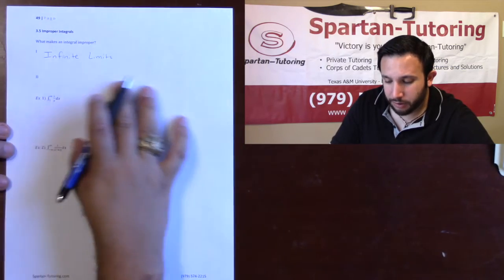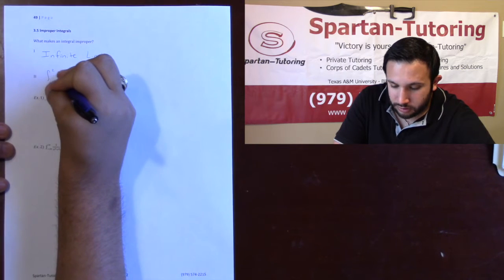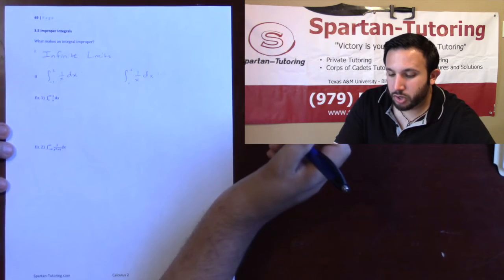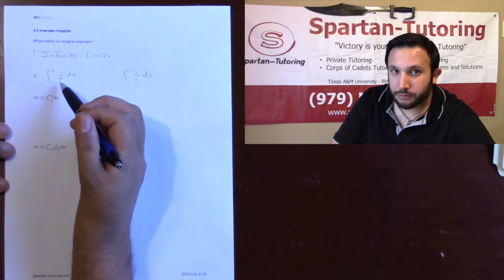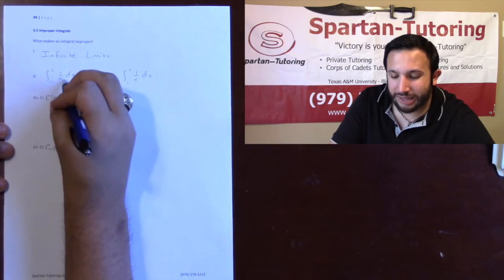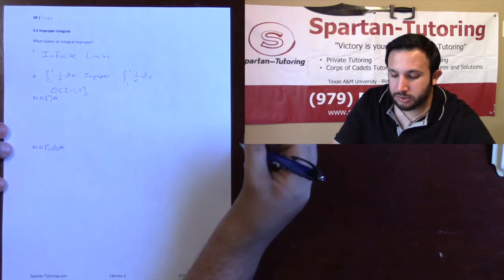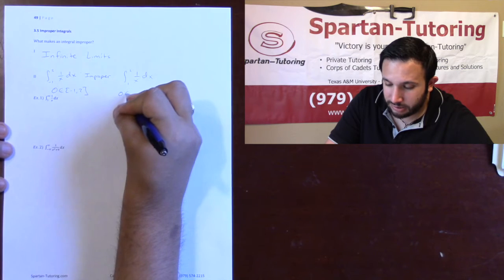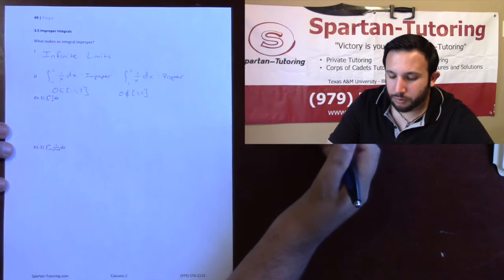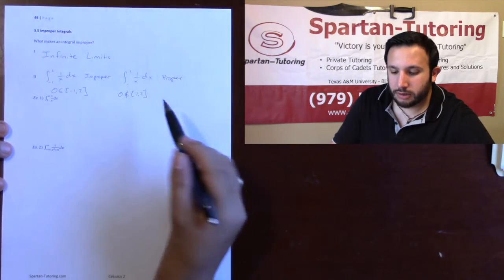To explain the second part, let me give you two integrals — one improper, one proper. See if you can identify which is which. The first integral is improper because the function is undefined at x equals zero, and zero is in fact between negative one and two. The second integral is perfectly okay because zero is not between one and two. The key point: whenever your function is discontinuous somewhere within your limits of integration, that's what makes it improper.